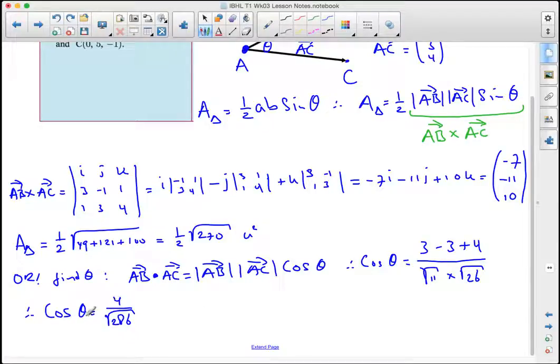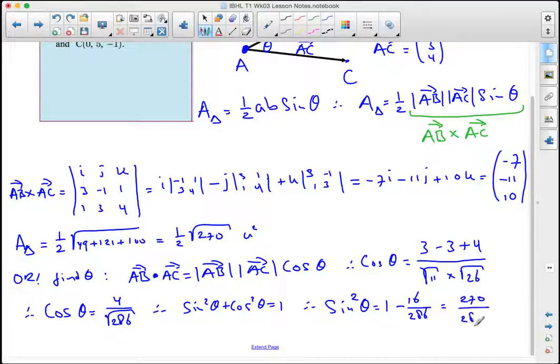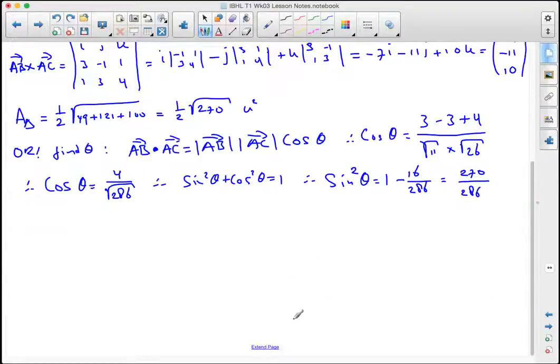Now we could work out theta, but suppose this is a paper 1 and you can't use your calculator. Then we can use sine squared theta plus cosine squared theta equals 1. Hence, sine theta here is 1 take away 16 over 286. That will be sine squared theta, which is 270 over 286. Hence, the sine of theta is the root of 270 over 286.